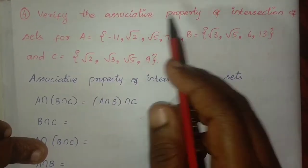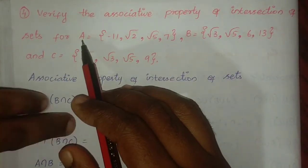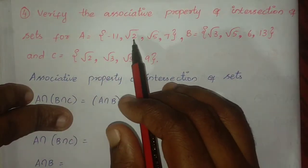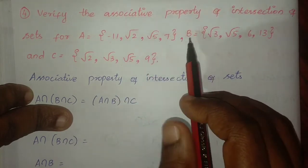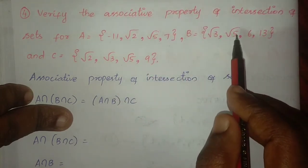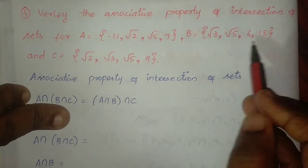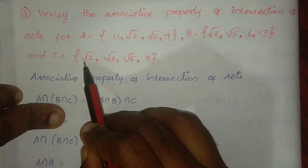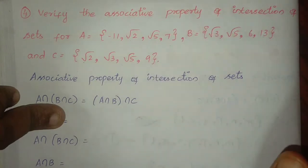Verify the associative property of intersection of sets for: A equals {-11, root 2, root 5, 7}, B equals {root 3, root 5, 6, 13}, and C equals {root 2, root 3, root 5, 9}.